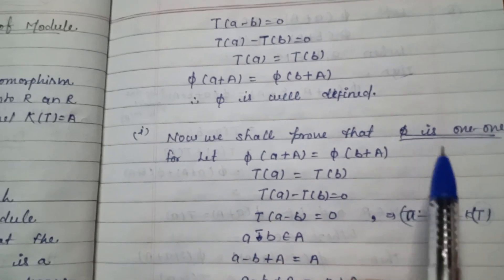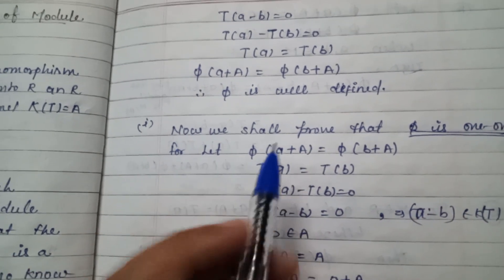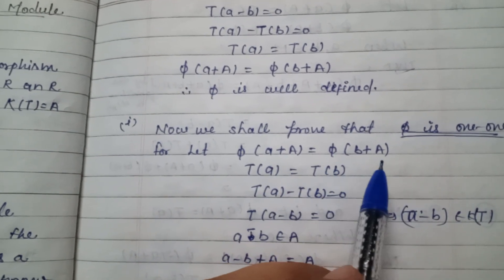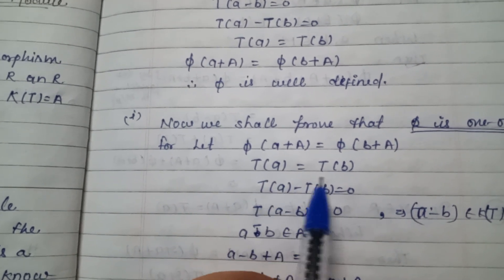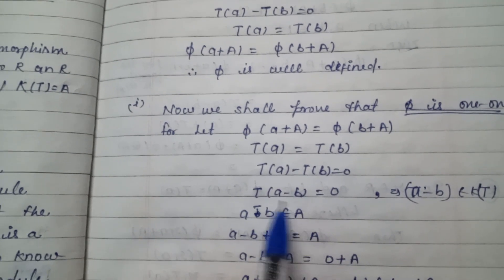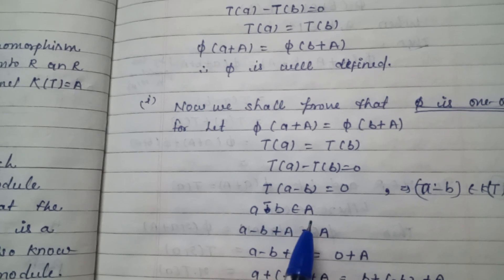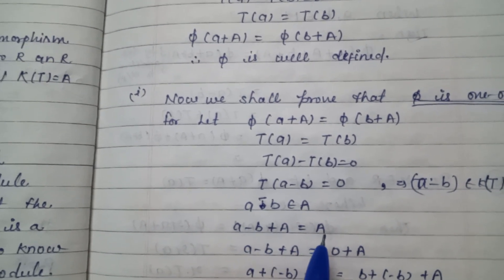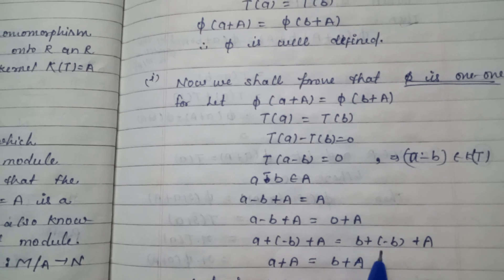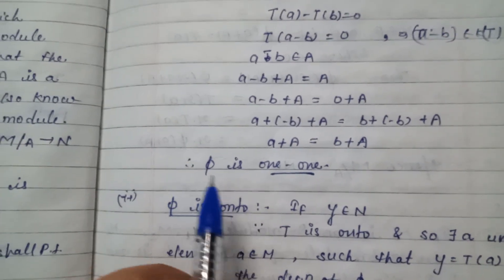Now we shall prove that phi is one-to-one. Let phi(a + A) = phi(b + A), so T(a) = T(b), which means T(a) - T(b) = 0, so T(a - b) = 0. Therefore a - b belongs to kernel of T = A. So a - b + A = A, meaning a - b + A = 0 + A, and thus a + A = b + A. Therefore phi is one-to-one.